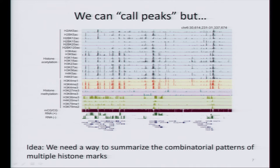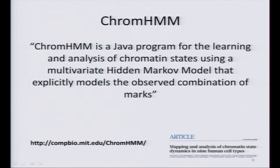The challenge is: if I give you this set of tracks, what can we learn from this? The idea is that if we can summarize this information in a more succinct way, maybe it's easier to explore this particular state. This is a problem that many people try to solve, and ChromHMM, a tool developed by Jason Ernst and Manoli Kellis, is one of the most popular.